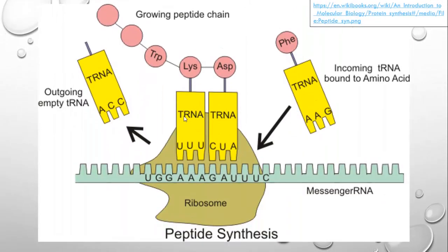Let's do that a few more times. These tRNAs are represented in a simplified way here. Here comes a tRNA with the anticodon AAG, and bound at the top of it is phenylalanine, abbreviated to phi. Because its anticodon is AAG, it can bind to where it finds UUC on the mRNA — A pairing with U, A with U, and G with C. So it will only bind where it finds its complementary codon.